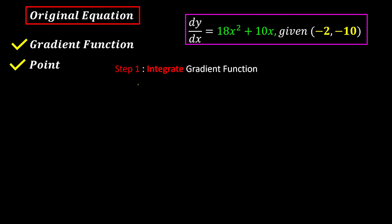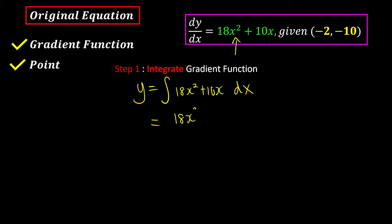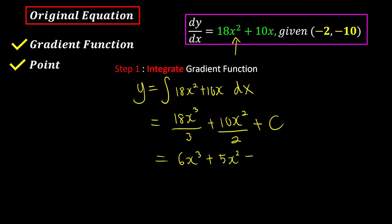The equation of the curve is the integration of 18x squared plus 10x with respect to x. Integrating: 18x cubed over 3 plus 10x squared over 2, plus c since it's indefinite. This simplifies to 6x cubed plus 5x squared plus c.